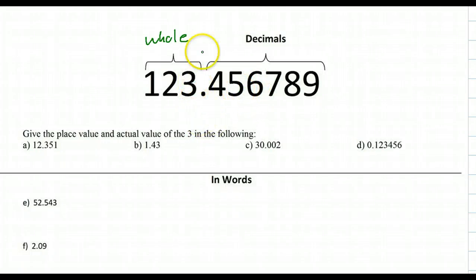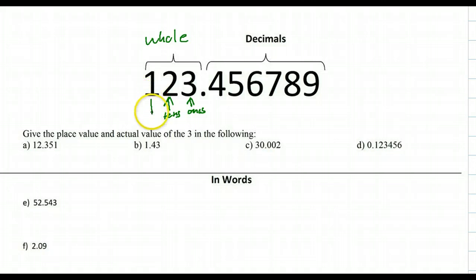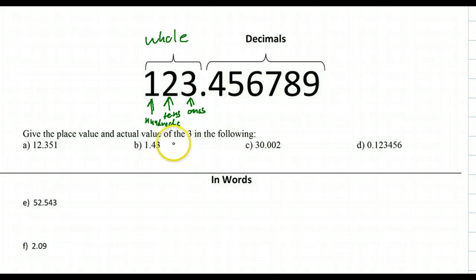Place value wise, this right here is our ones, these are our tens, and then these right here are the hundreds. We just repeat it — we go into the thousands category: 1,000; 10,000; 100,000 — then into the millions: 1 million, 10 million, 100 million — and then so on with billions.